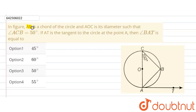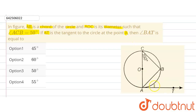The given question says that in the figure, AB is a chord of the circle and AOC is its diameter, such that angle ACB is equal to 50 degrees. AT is a tangent to the circle at point A. We are asked to find out the measure of angle BAT — this angle here.